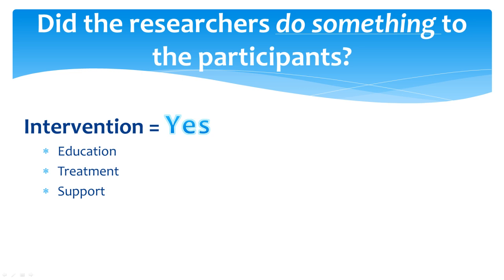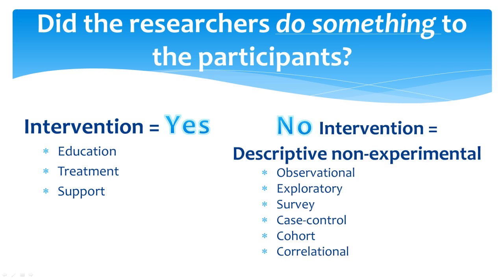If the answer is yes, there was an intervention, then the study is either quasi-experimental or experimental. If the answer is no, the study is descriptive non-experimental. You could be more specific in the description of the design, but for the purposes of grouping your research in a literature review, this label is often sufficient at an undergraduate level.